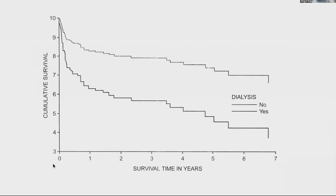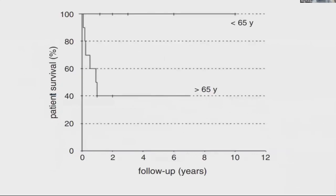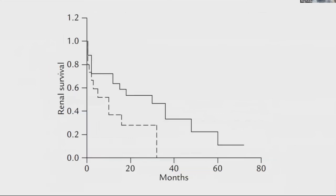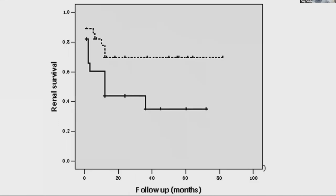This Kaplan-Meier curve from European cohorts shows that need for dialysis at admission was important for overall survival, which is also true in ANCA-positive vasculitis. Another Kaplan-Meier curve from the 2005 paper shows age at diagnosis was important for patient survival. The Taiwanese cohort shows the solid line (seropositive) versus dotted line (seronegative) — seronegative patients did worse in terms of renal survival, but this was not significant. The Chinese cohort similarly shows the seronegative group did worse for renal survival.